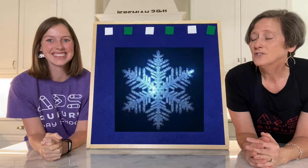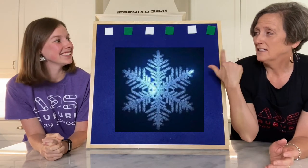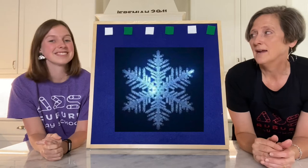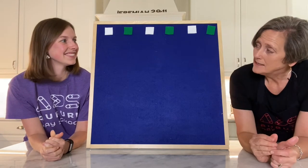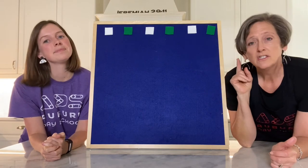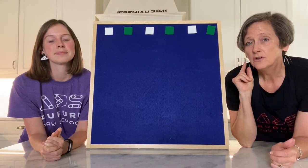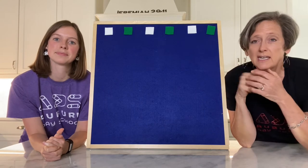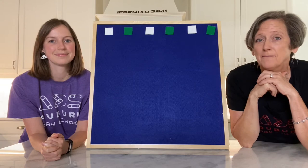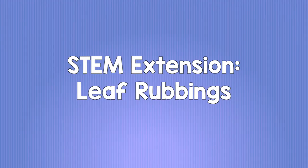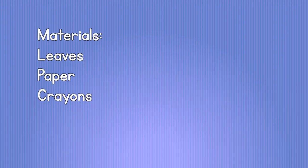That's so cool, and I love how she says 'swirling' because swirling is a type of pattern — we're going to talk about that in a minute. But let's do a few experiments with fractals. We're going to do some extension experiments right now so you can join us. The first thing you're going to need is a leaf, a crayon, and a piece of paper. Stem extension: leaf rubbings. Materials: leaves, paper, crayons.